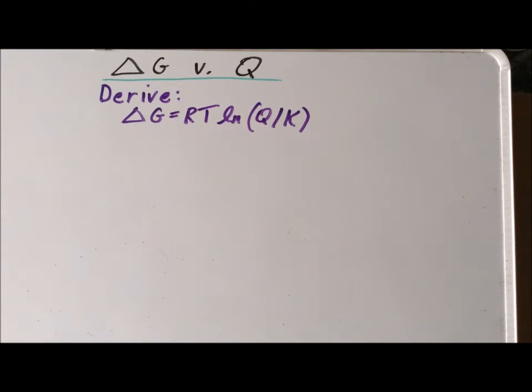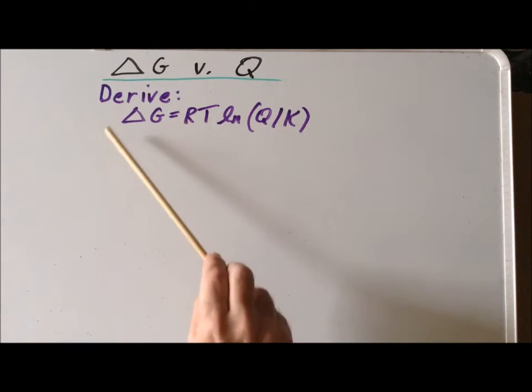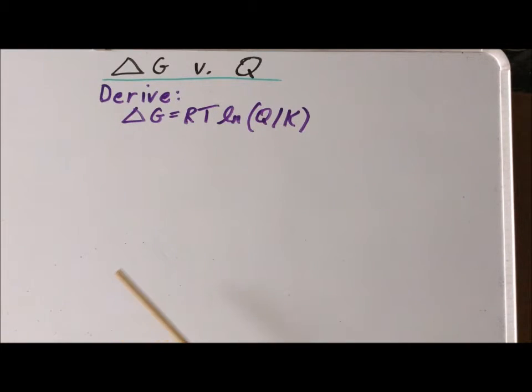Hello. In this video, we are going to derive the following relationship: that the Gibbs energy, delta G, is equal to RT times the natural log of Q divided by K, where Q is the reaction quotient and K is the equilibrium constant.